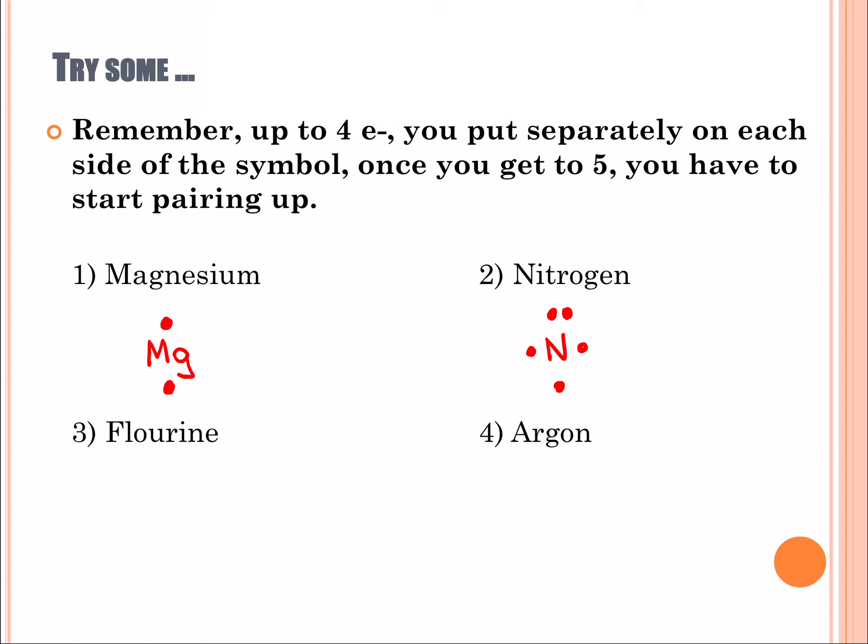Fluorine is in the 17th column, so fluorine has seven valence electrons: one, two, three, four, five, six, seven. Argon is a noble gas. Noble gases are in the 18th column, so let's write argon: one, two, three, four, five, six, seven, eight, and that gives it its full octet, its full shell.